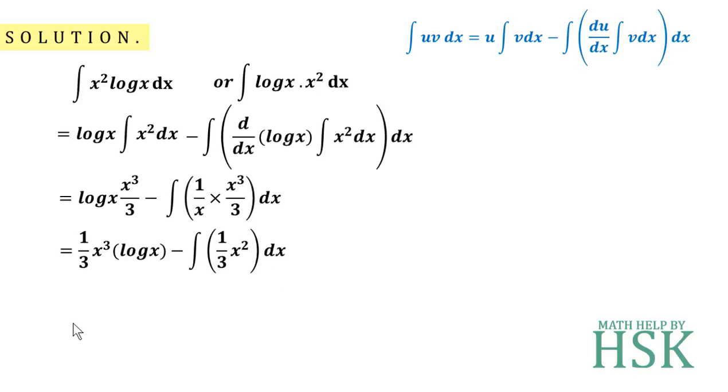Now further I can integrate x squared and write again as x cubed over 3. On simplifying these terms, the final answer is 1/3 x cubed times log x.